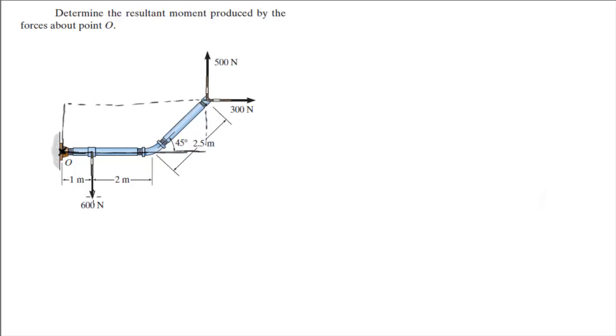So the sum of the moments at O, assuming counterclockwise is positive. First let's work with the 600 force. As you can see, it pulls this lever arm clockwise so it's negative. The force is 600 newtons and the length of the lever arm is 1 meter.